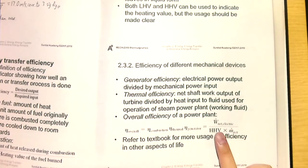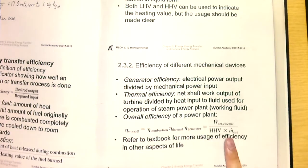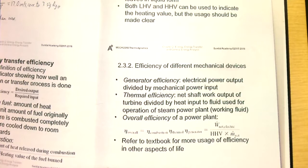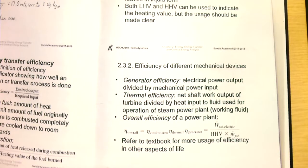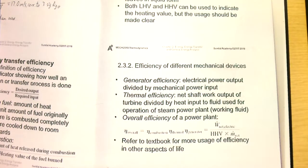The overall efficiency equals the ultimate output — the net electrical power divided by the higher heating value times the net mass flow rate. The efficiencies are multiplied together because they represent a sequence of processes: the output of the first process equals the input of the second process, so when you multiply the two efficiencies together, those intermediate terms cancel, leaving the ultimate output and the input.